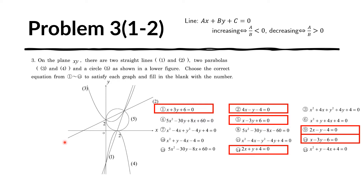We notice that line 1 and line 2 are both increasing from left to right. That means the product or quotient of the coefficient of X and the coefficient of Y must be negative, meaning they have to have different signs. So let us eliminate those choices that have the same signs for the coefficient of X and the coefficient of Y.